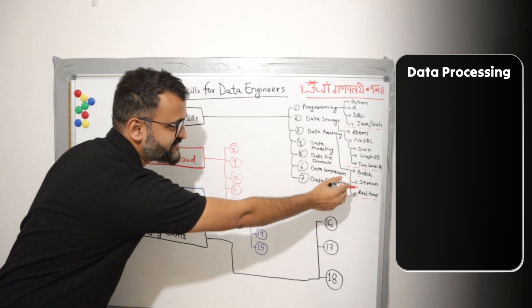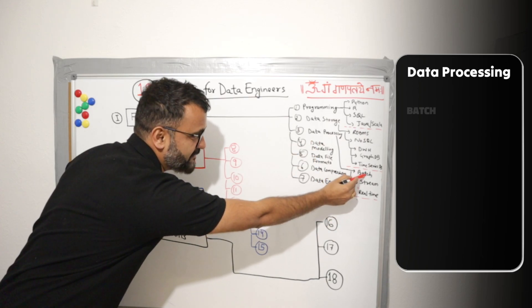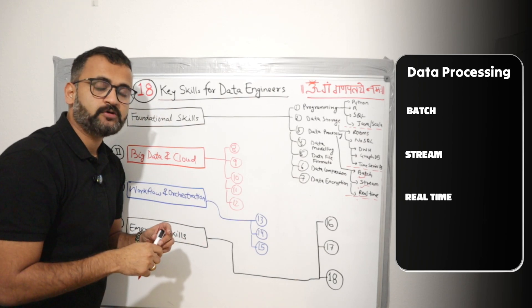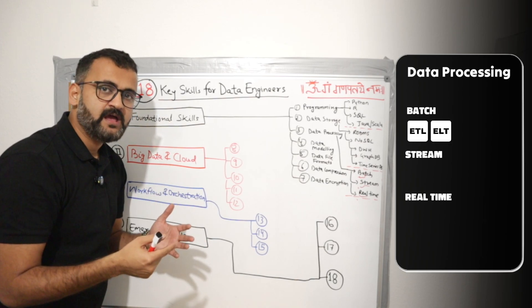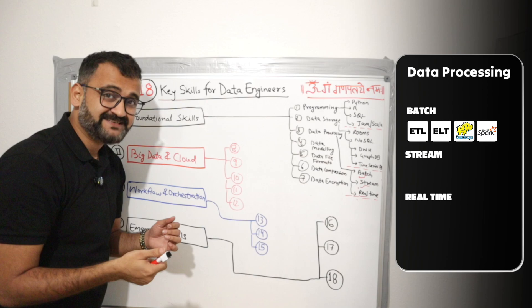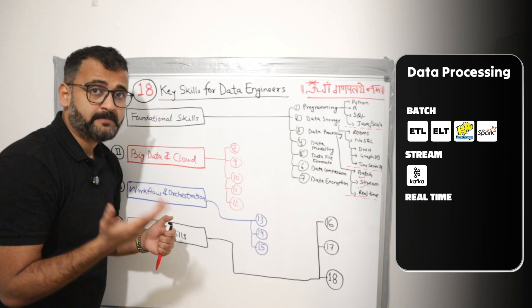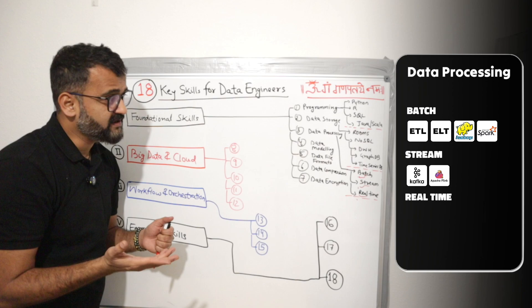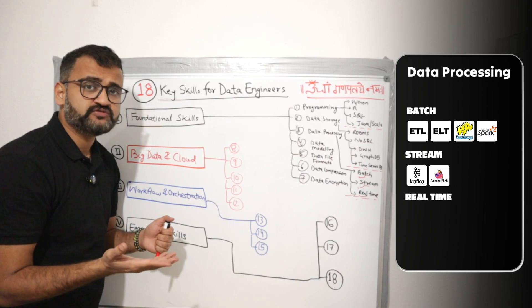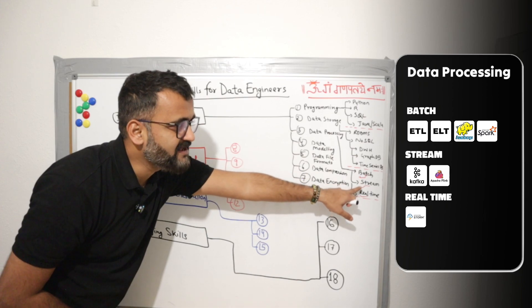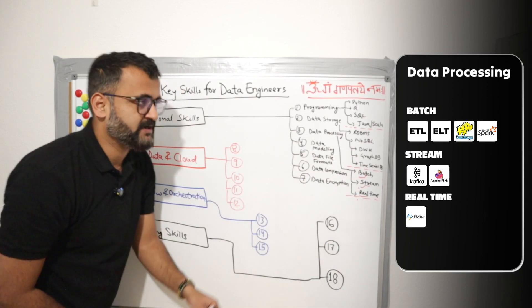Under data processing, which is understanding it in detail. What is batch? What is stream? What is real time? So under batch, you have to understand concepts like ETL, ELT, how you can use Hadoop and Apache Spark, for example. Stream is all real time using Apache Kafka, Apache Flink. Real time data can be used with tools like Apache Storm. There are multiple tools, but you have to understand how you will process batch data, streaming data, and real time data.